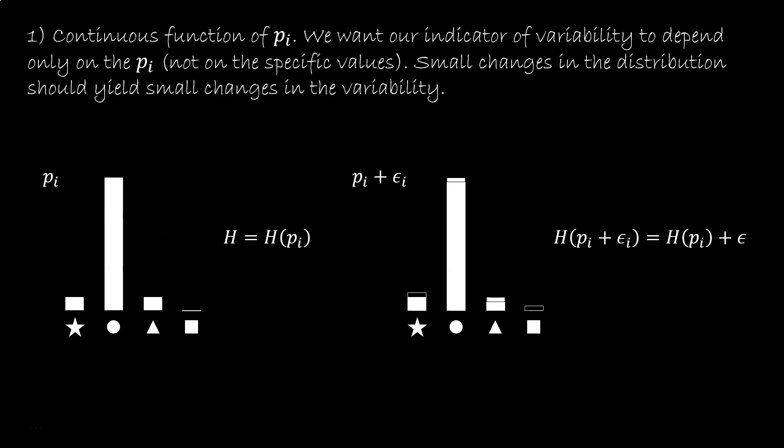Okay, what would be a good indicator for variability? What should a good indicator be like? Well, let's gather some requirements. First of all, we would want it to be a continuous function of the PIs. It should not depend on the specific value, but only on how the elements are grouped in those values. After all, it's how similar they are to each other. So it should depend on the PIs only, and not on the values themselves.